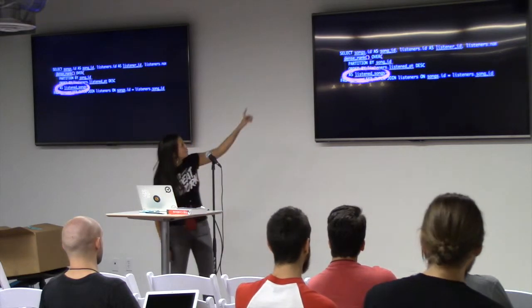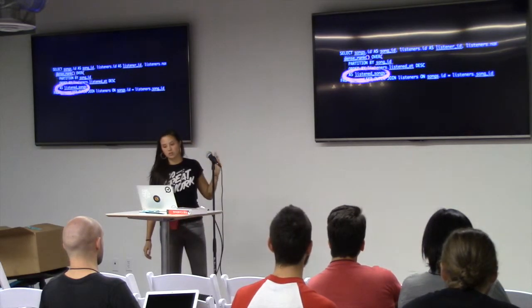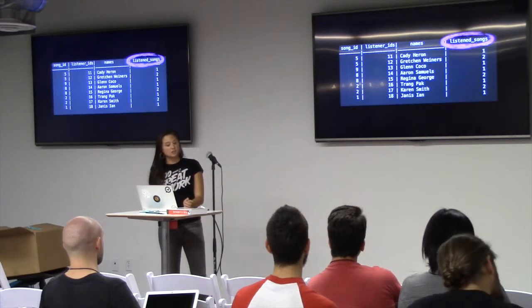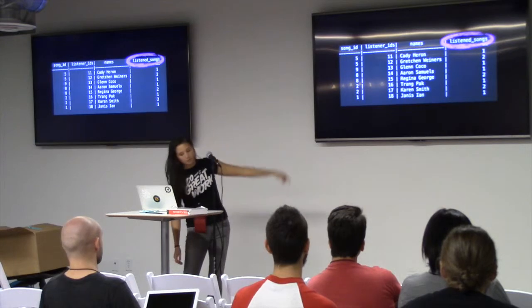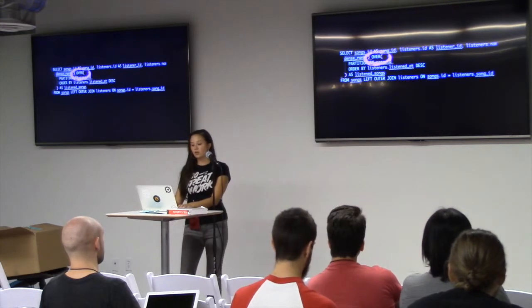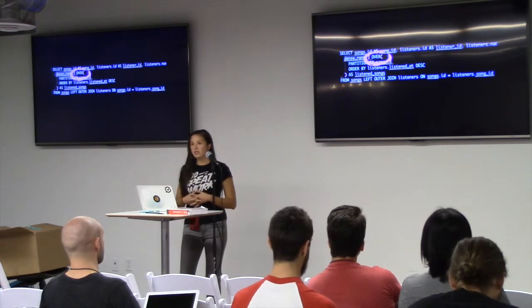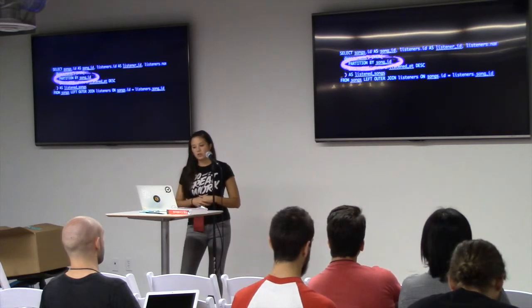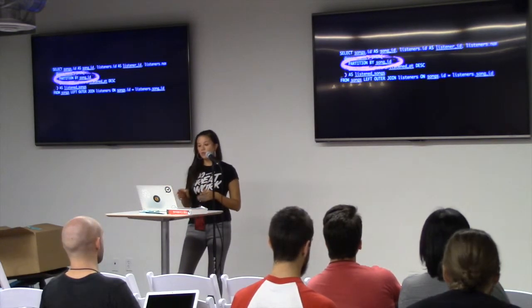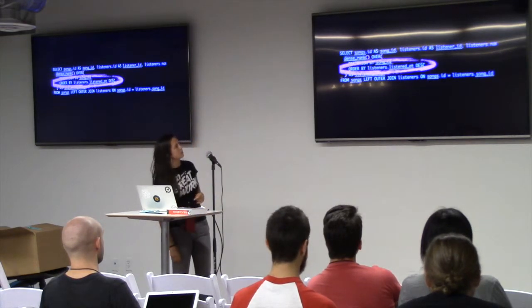We also have, as you see down here, 'as listen song.' We have dense rank over, and 'as listen songs' is the name of our last column. The 'over' keyword is what triggers the window function — any time you're using one of those functions like dense rank or rank, you're going to need to use the keyword 'over.' This partition by — which is within the over — we are saying that we scope the rank to the song. And this ranks the listeners by listened_at. That's all we're doing.